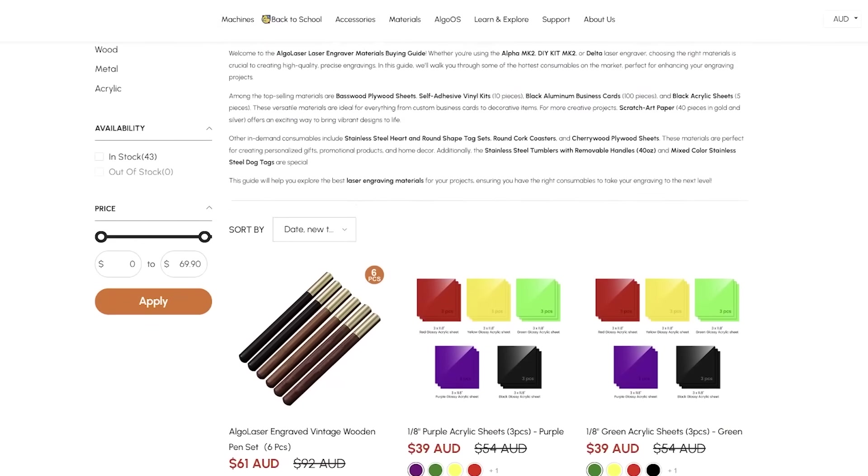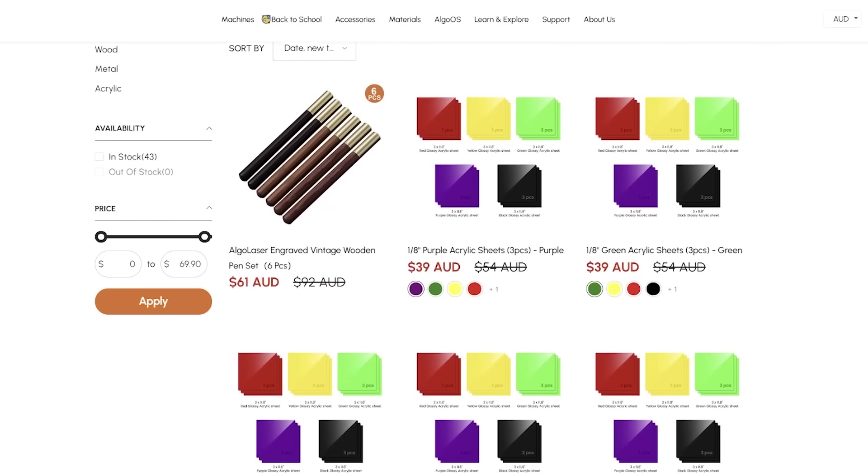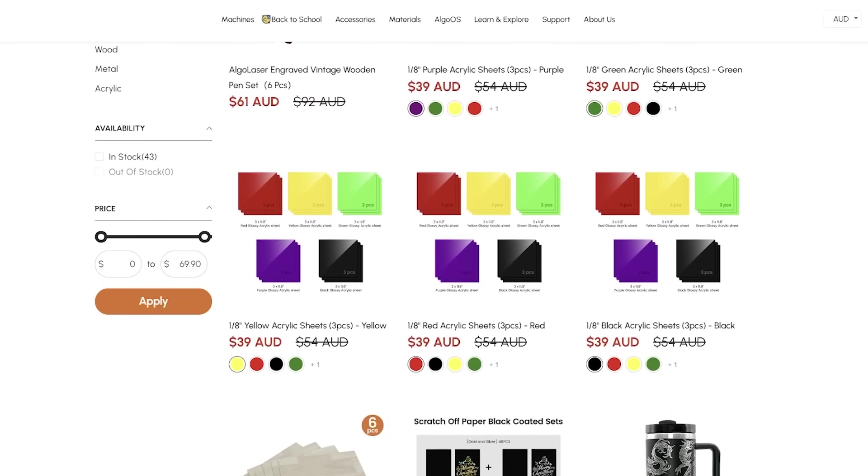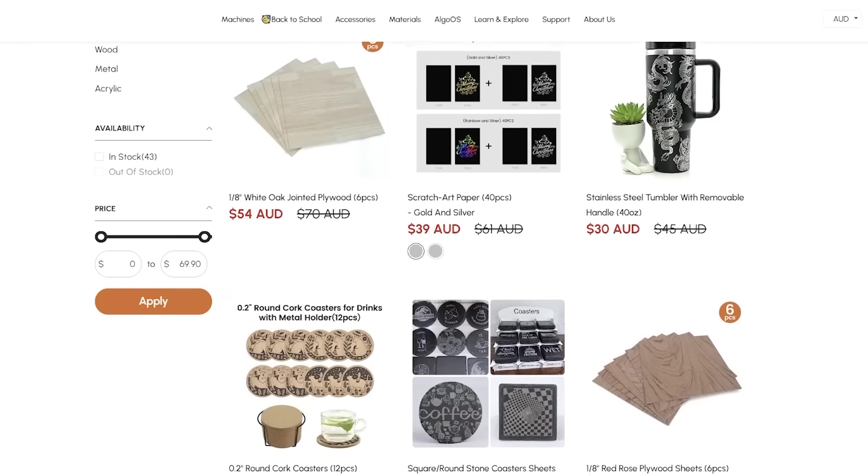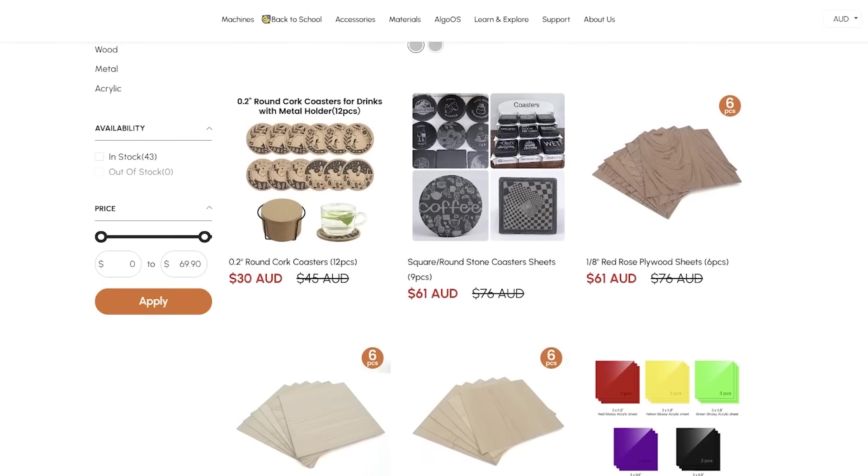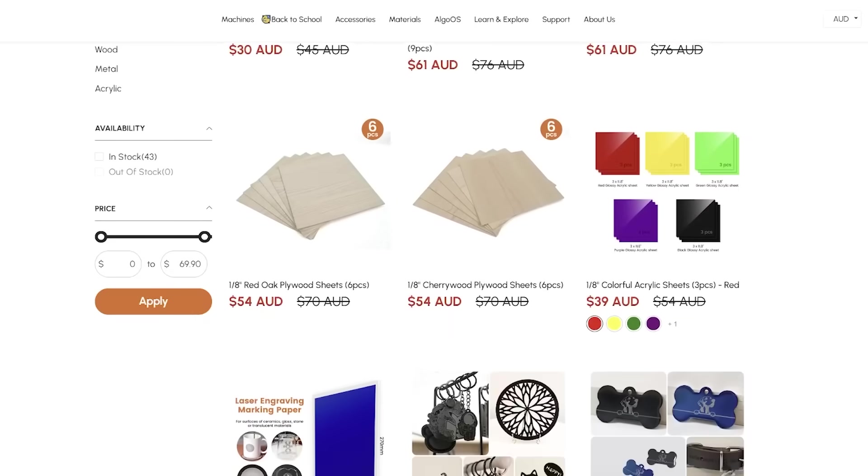On the Algo Laser website, they've got a section where you can select a whole bunch of different materials. They do everything from tumblers to plywood and also little cards and little coasters. There's a huge variety to choose from.